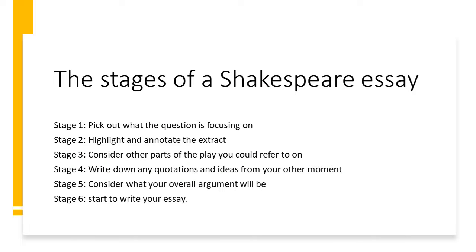So, the stages of a Shakespeare essay. Stage 1: pick out what the question is focusing on. Stage 2: highlight and annotate the extract. Stage 3: consider other parts of the play you could refer to. Stage 4: write down any quotations and ideas from the other moment. Stage 5: consider what your overall argument will be. Stage 6: start to write your essay. Pause the video to jot down those 6 stages if you haven't got them in your book already.